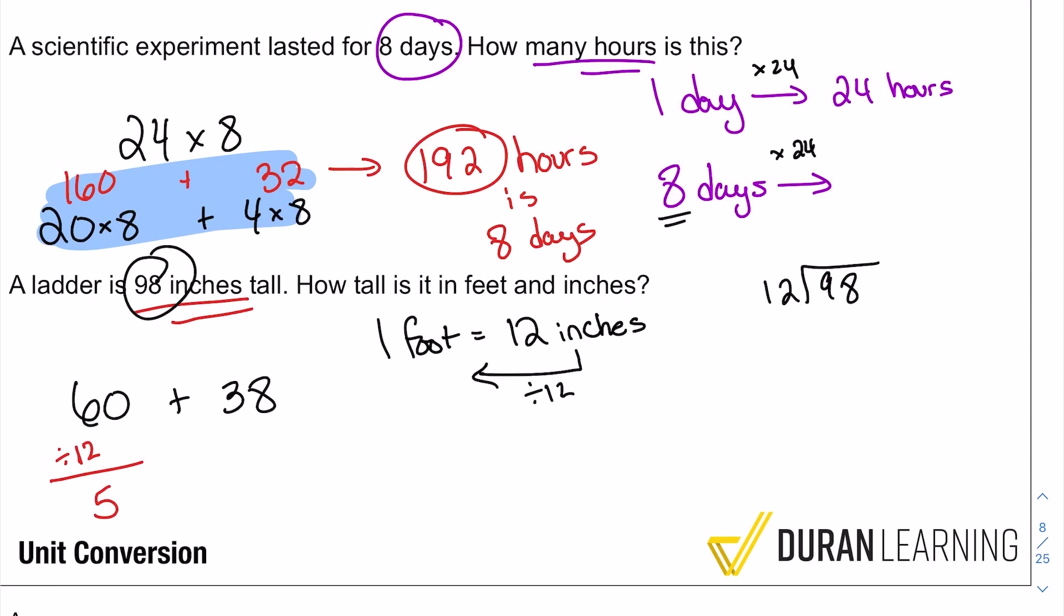Now 38, well, you can divide that by 12, but it's not going to be perfect. I know that 36 would be fine. So if I had 36 and two, I know that 36 divided by 12 is going to be three. And then we have the extra two inches.